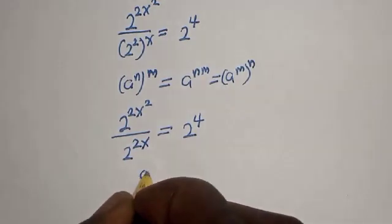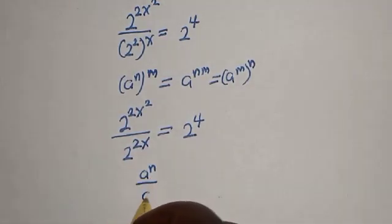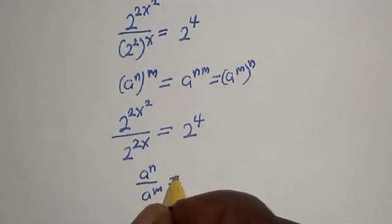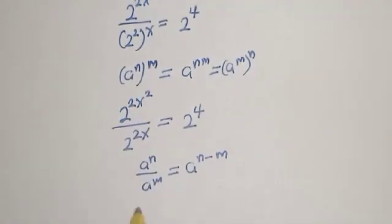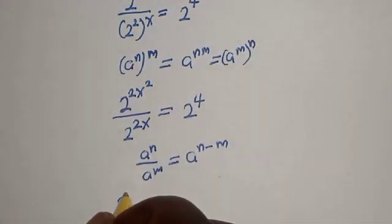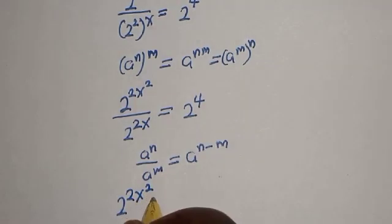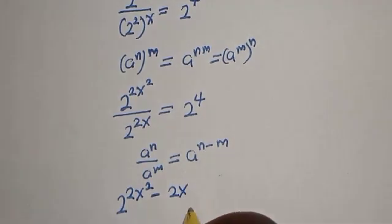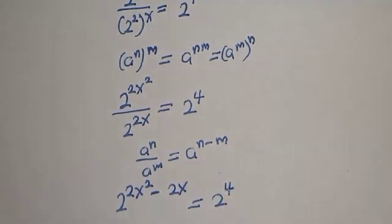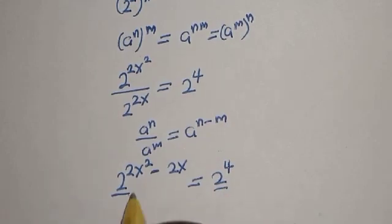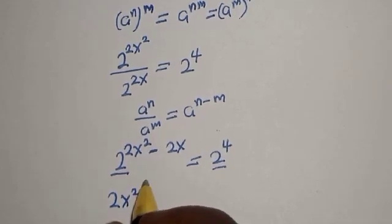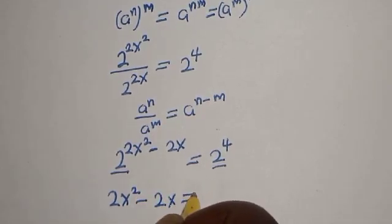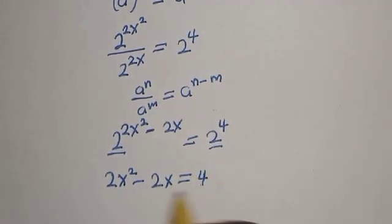Also remember: a raised to power n divided by a raised to power m is equal to a raised to power n minus m. Applying this rule, we get 2 raised to power (2s squared minus 2s) is equal to 2 raised to power 4. Since the bases are the same, we equate the exponents: 2s squared minus 2s is equal to 4.